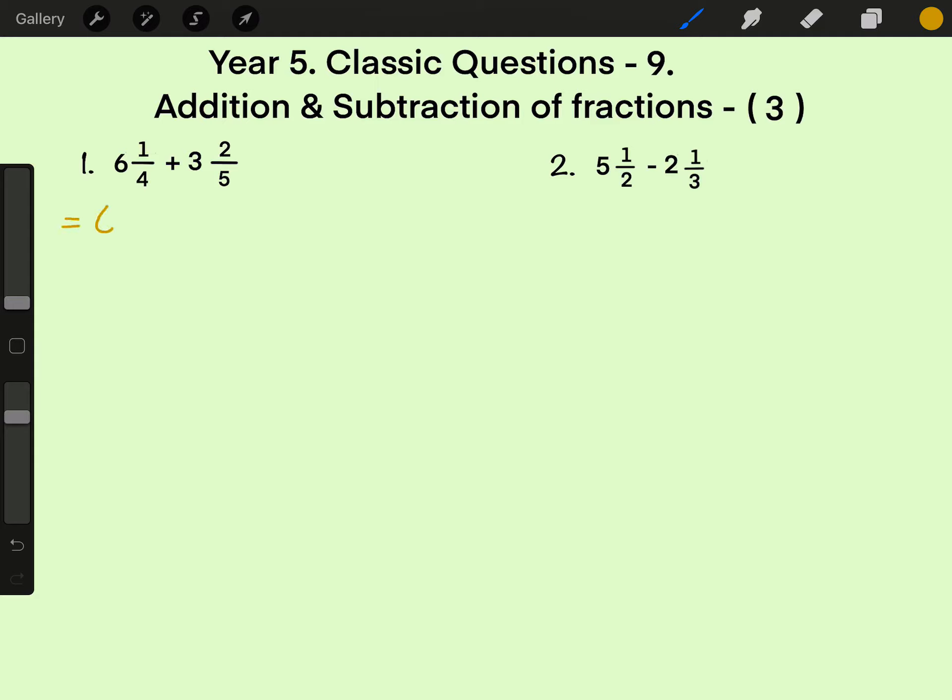So 6 plus 1 quarter plus 3 plus 2 fifths. 6 plus 3 is 9, and then plus 1 quarter plus 2 fifths.